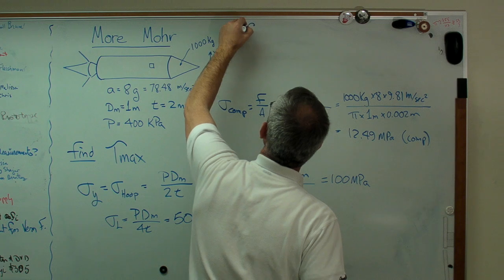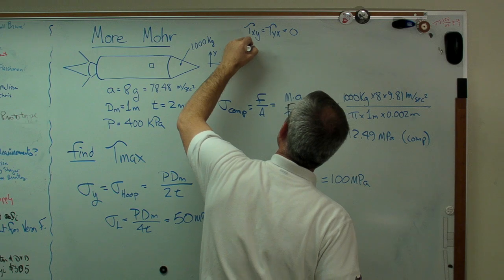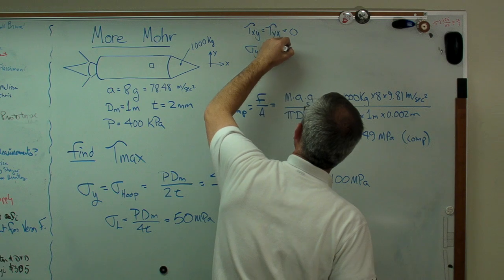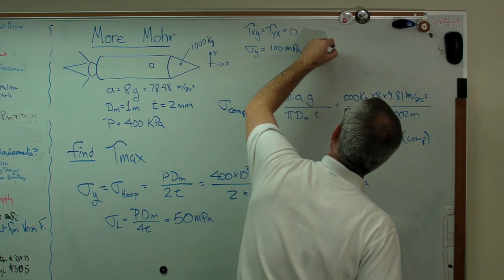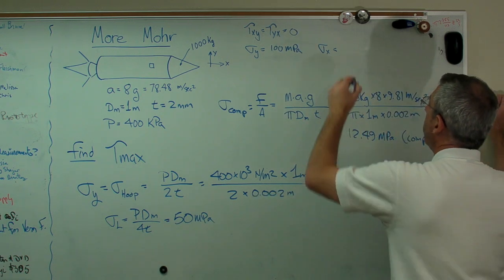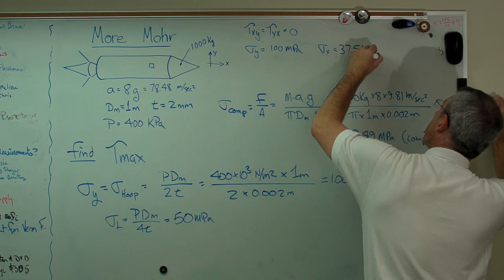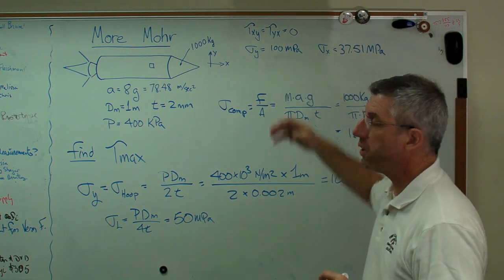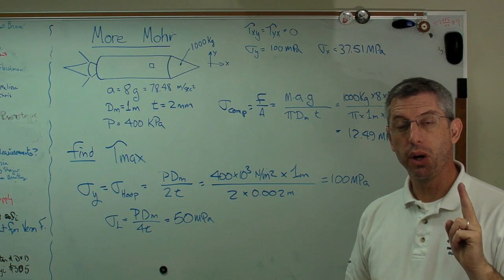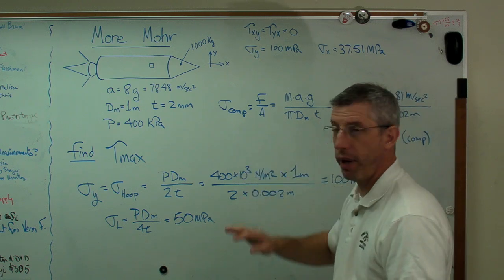So, so far we know tau xy equals tau yx equals 0. Sigma y is 100 megapascals. And sigma x is going to be longitudinal stress minus that compressive stress, and that works out to be 37.51 megapascals. We've got all the information we need to draw a stress element and draw Mohr's circle. So, I'm going to clear out some space here.